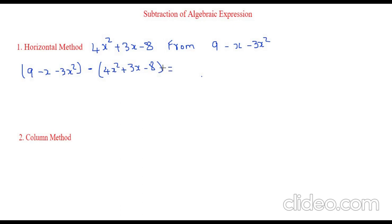Now first remove the brackets. So it would be 9 minus x minus 3x square. The first equation will be as such. Now let's multiply the second expression with a minus sign. Since there is a minus sign outside we have to remove this bracket. So minus times plus is minus 4x square, minus times plus is minus 3x. Now minus times minus is plus 8.